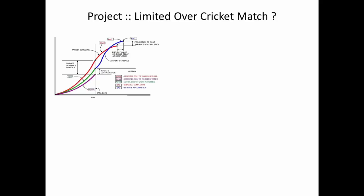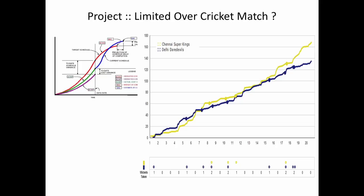Looking at earned value and the S curve — BCWP, ACWP, and all of this — it is reminiscent of a limited-overs cricket game: the run rate, asking rate, catch-up rate, wickets taken. The budgeted cost of work scheduled is what the first team has given, and the second team is doing the execution. Course participants are invited to think about correlations between a run chase and EVM.